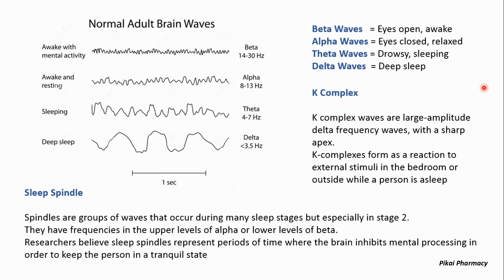In this video we're going to learn four types of electrical brain waves: alpha, beta, theta, and delta waves. In this picture you can see these waves, where you'll find that beta waves have the highest frequency and delta waves have the lowest frequency.